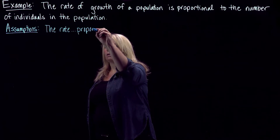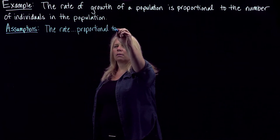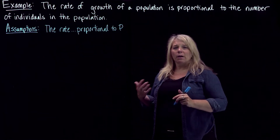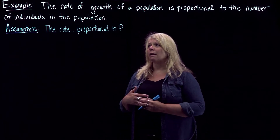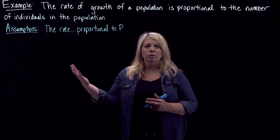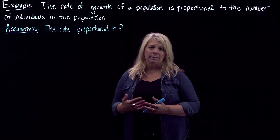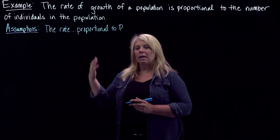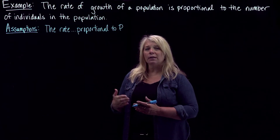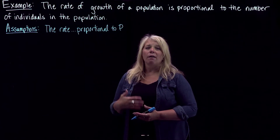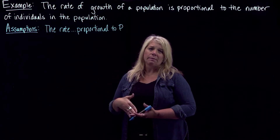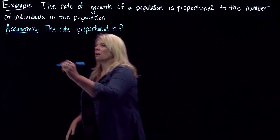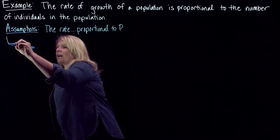The other thing we're going to assume is that we can describe the proportionality constant. That leads us to the next step, which is to clearly define what our variables — independent variables, dependent variables, and parameters — are. That proportionality constant is actually a parameter, so we're going to clearly define our variables.